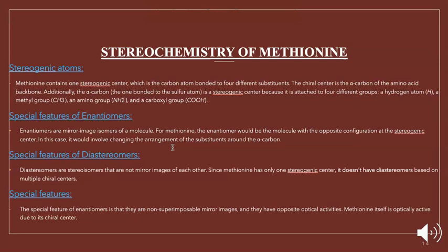Enantiomers: enantiomers are essentially mirror image isomers of a molecule. For methionine the enantiomer would be the molecule with the opposite configuration of stereogenic center, which would involve changing the arrangement of the substituents around the alpha carbon. Diastereomers are stereoisomers that are not mirror images of each other, and since methionine has only one stereogenic center it does not have diastereomers based on multiple chirocenters. Special feature of enantiomers is that they are non-superimposable images and they have opposite optical activities. Methionine itself is optically active due to its chirocenter.